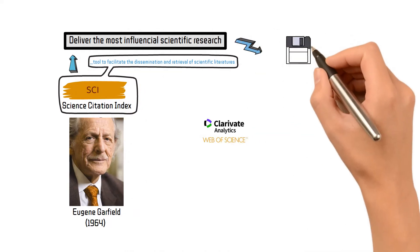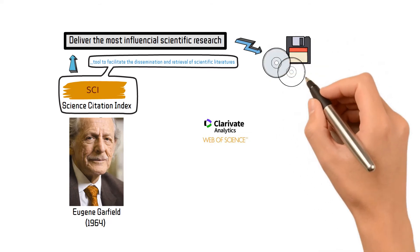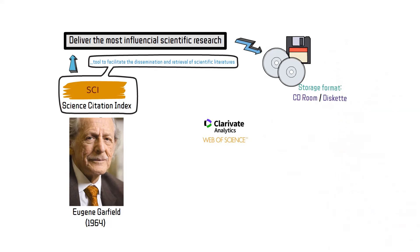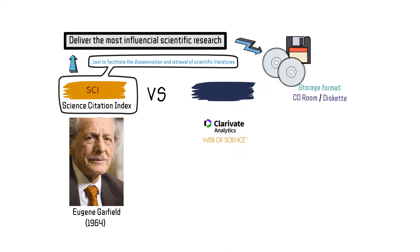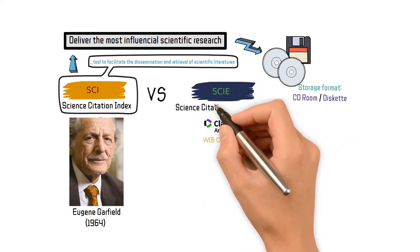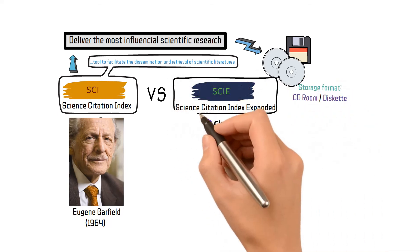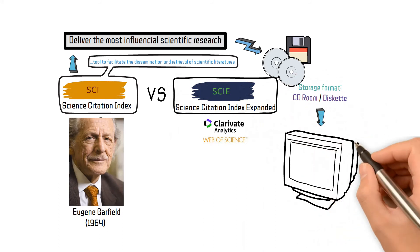Importantly, it should be noted that the storage format of research indexed by SCI has since been CD-ROM, DVD, or diskette. This detail is important because the SCI is essentially the web version of what used to be a database available only on CD or diskette.